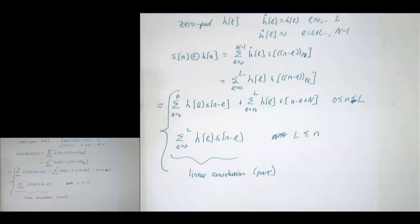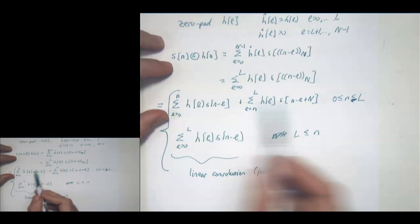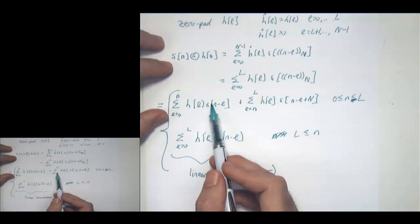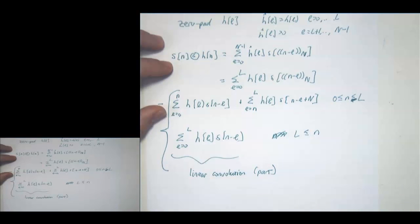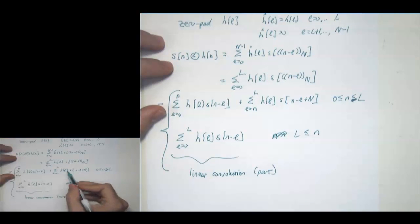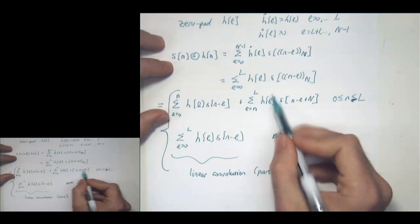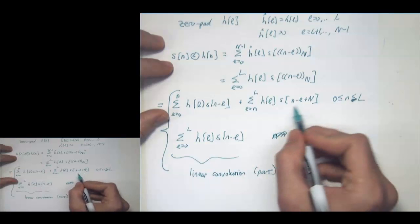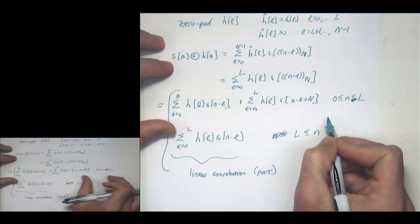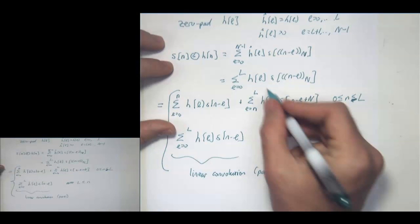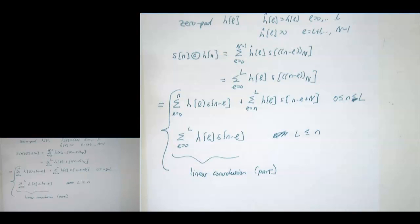The main trick is the use of a guard interval or cyclic prefix. For example, if the last L samples of S were zero, the wrapping effect would be eliminated. Instead of using zeros, we use a cyclic prefix: we copy the last L_C symbols of the data block and prepend them to the transmitted sequence.